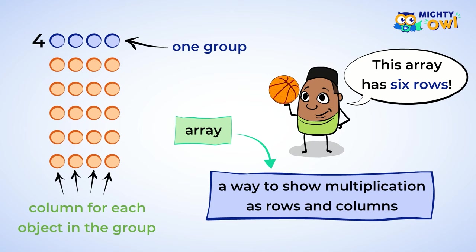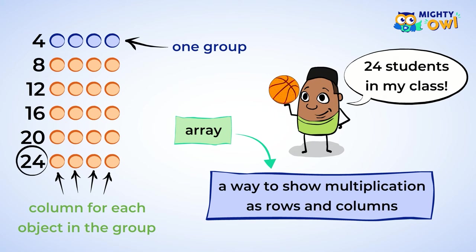You can use the array to find how many students are in your class by skip counting each row. So, four, eight, twelve, sixteen, twenty... There are twenty-four students in your class.